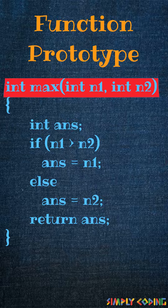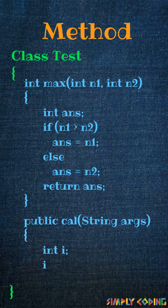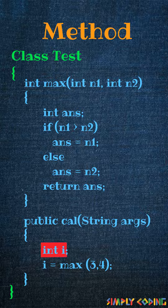Methods are always part of some class in Java, and a class can have any number of methods. Now let's use or call the function — we will pass two integer numbers and assign the return value into another integer variable.